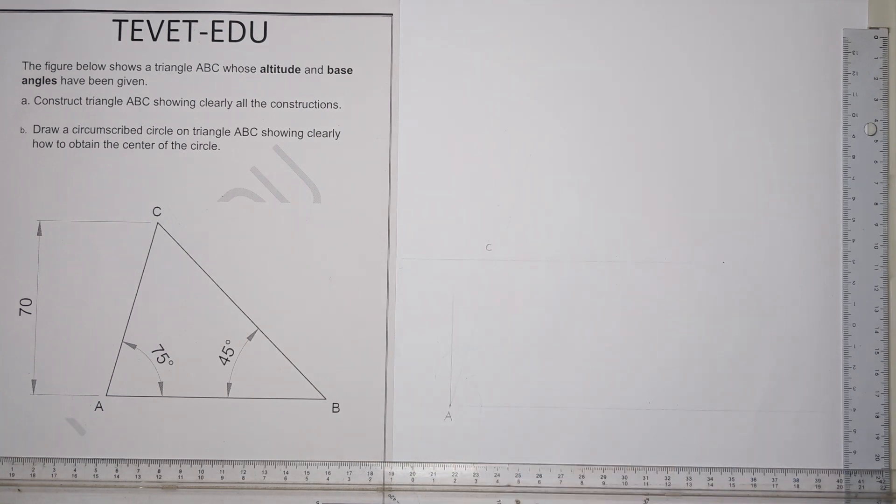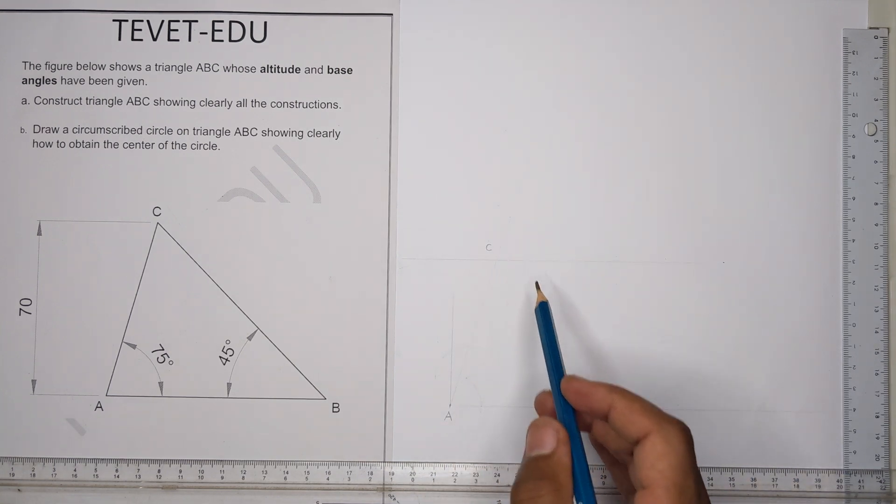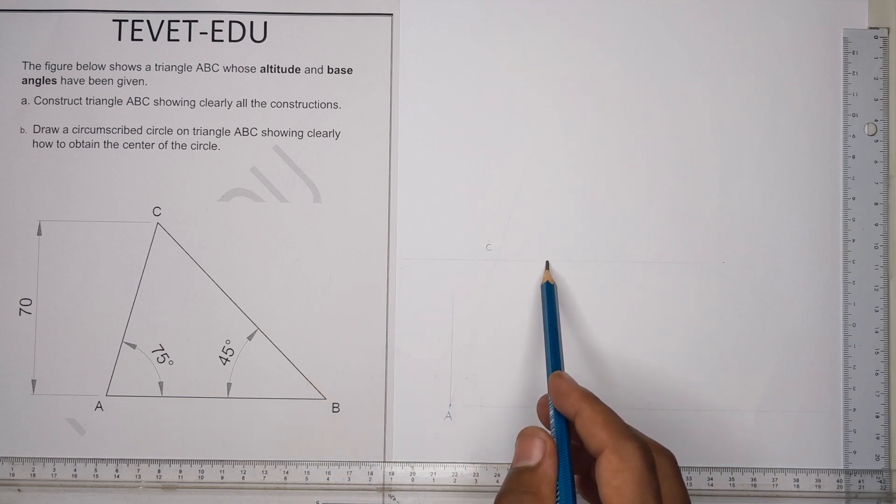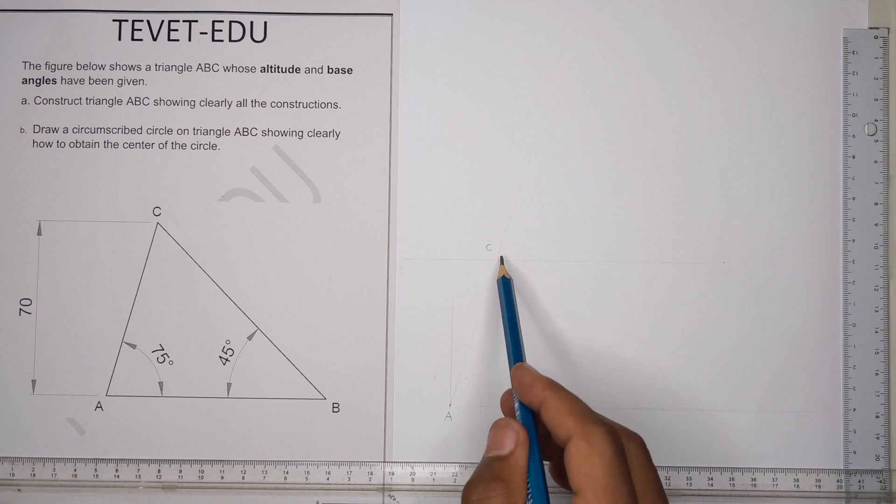Point C. Now from point C here you want to construct an angle of 45 degrees, so that when you draw the line...